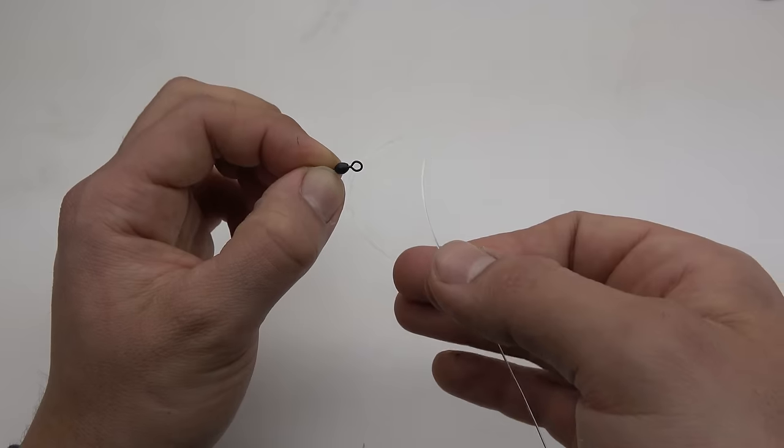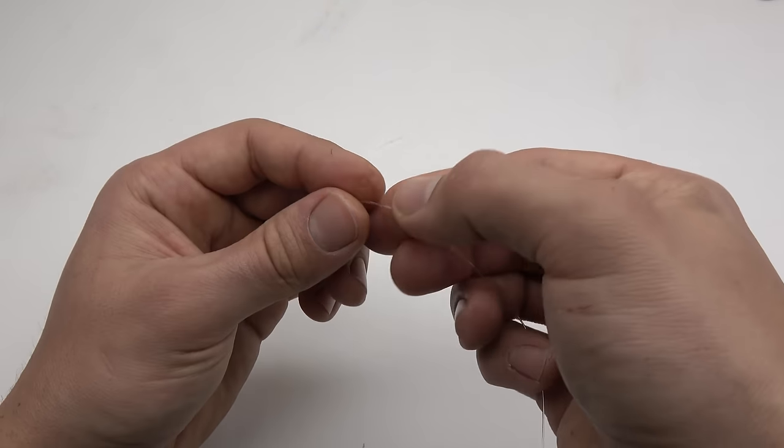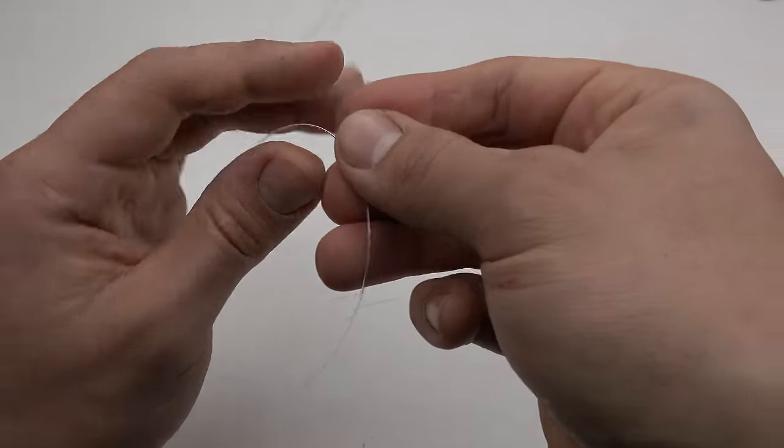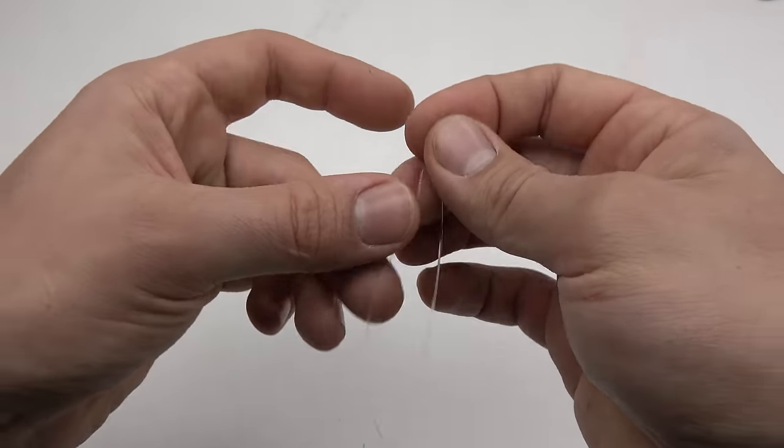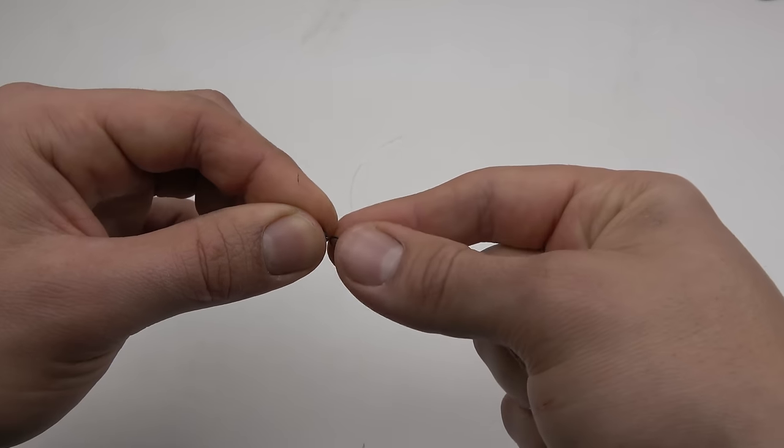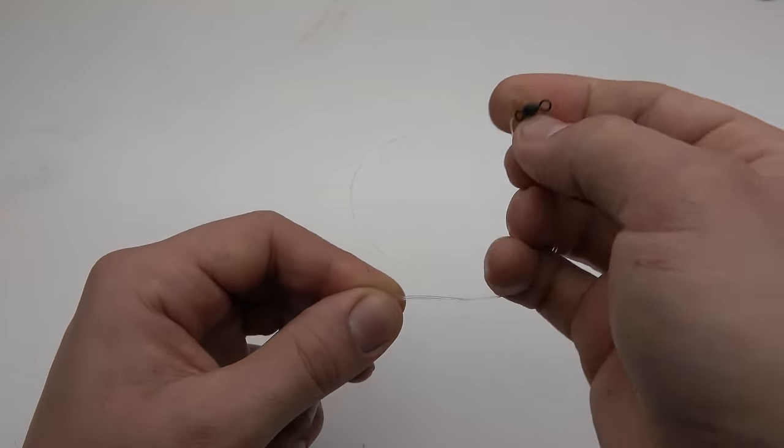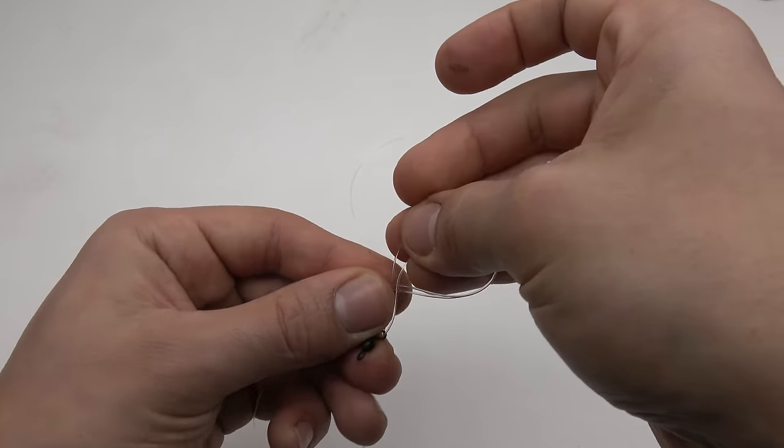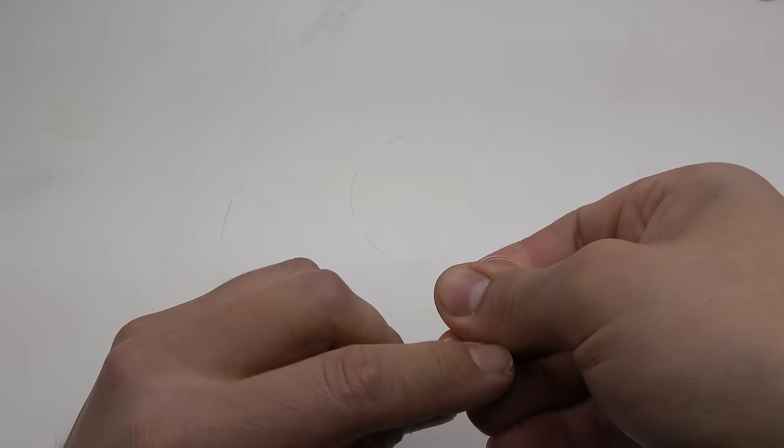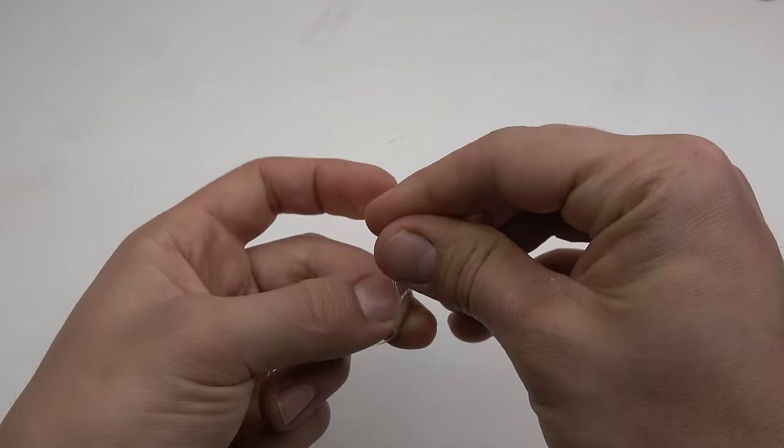To connect the end of the rig to the swivel, we are going to be using a figure 8 knot. So send the end of your rig through one hole on the swivel, and then we are basically going to draw a figure 8 with the swivel. There is a loop, and then if you come back around and then back through the loop...